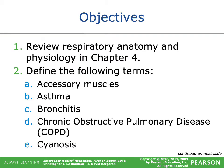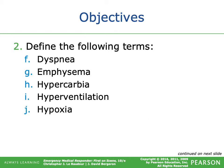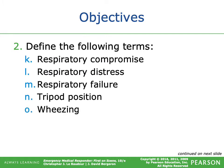The objectives for chapter 15: number one is a review of respiratory anatomy and physiology from chapter four. Number two, we're going to define the following terms: accessory muscles, asthma, bronchitis, chronic obstructive pulmonary disease or COPD, cyanosis, dyspnea, emphysema, hypercarbia, hyperventilation, hypoxia, respiratory compromise, respiratory distress, respiratory failure, tripod position, and wheezing.